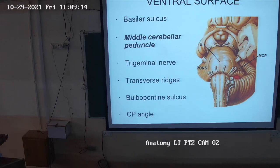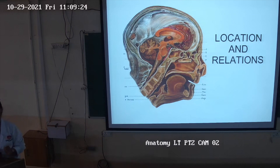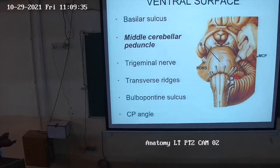The ventral surface has a basilar sulcus. In this picture, you can see an artery running in front of the pons — this is the basilar artery, formed by the joining of the two vertebral arteries. The basilar artery runs on the surface of the pons, and when it is removed, it leaves a depression called the basilar sulcus.